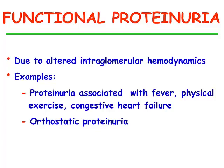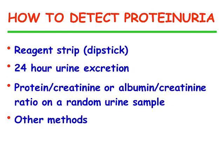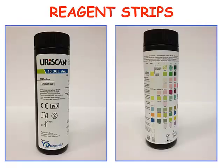This type of proteinuria is usually transient. Then we have orthostatic proteinuria, again associated with intraglomerular hemodynamic changes. Testing urine samples for the presence of proteinuria is an essential part of the identification of kidney diseases. We have different possibilities to detect and quantitate proteinuria in the urine: reagent strip dipstick, 24-hour urine excretion, protein to creatinine or albumin to creatinine ratio on a random urine sample, and other methods.